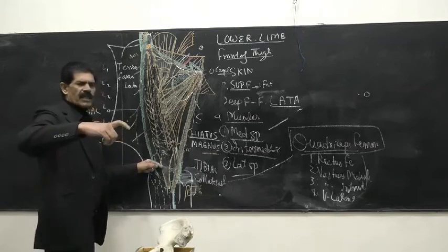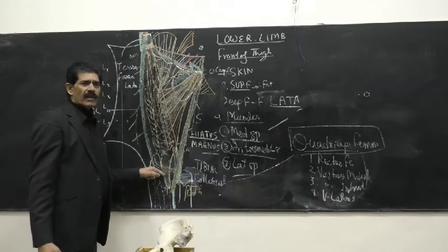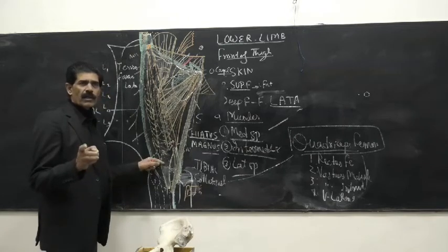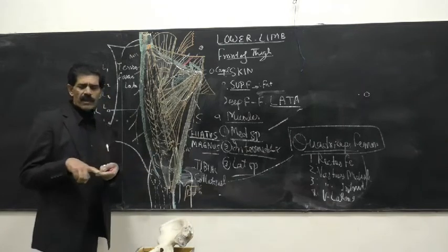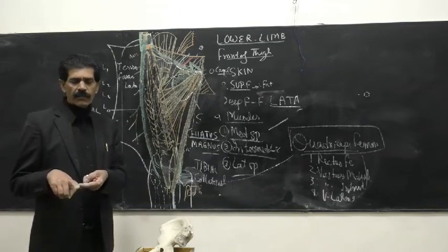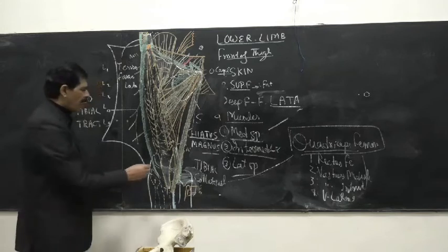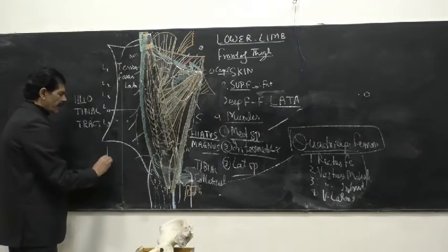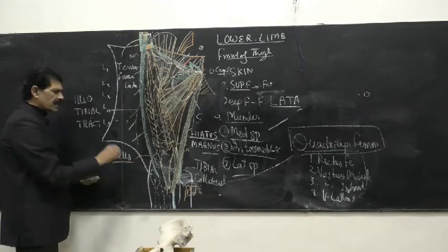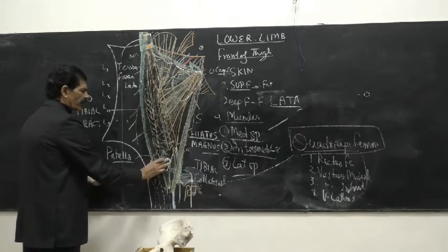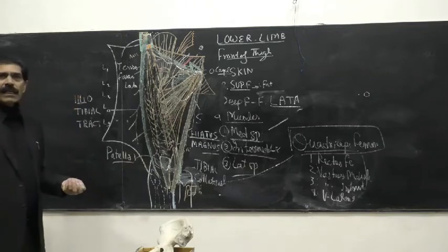All four fused tendons of the quadriceps femoris insert over the tibial tuberosity. During flexion and extension, the posterior surface of the tendon has friction with the front of the femur. To prevent damage to the tendon, a bone is formed inside it — called the patella or kneecap. This triangular bone inside the tendon is a sesamoid bone.